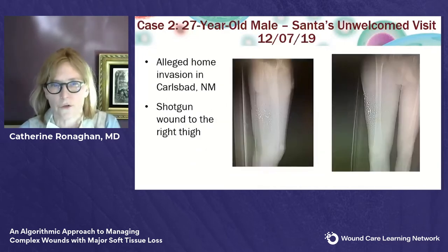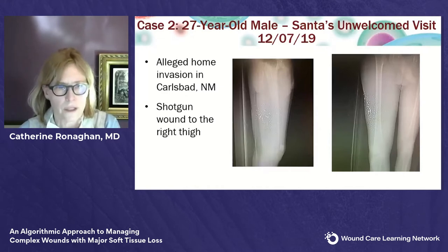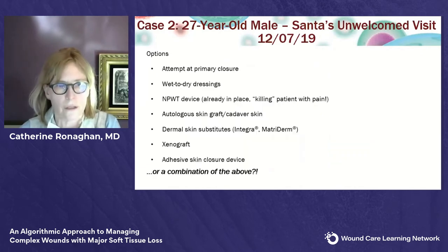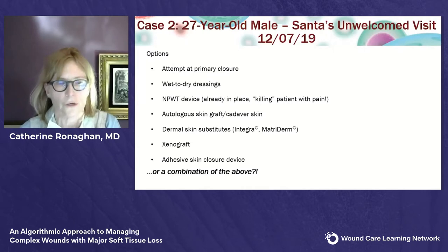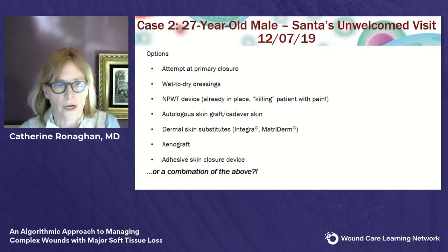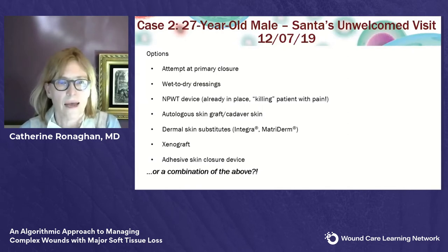The next case is a 27-year-old from Carlsbad who sustained a shotgun wound to the right thigh in an alleged home invasion. You can see the pellet distribution. Options include attempted primary closure, wet-to-dry dressings, or negative pressure wound therapy — which my colleague initially placed. The patient couldn't tolerate the negative pressure device and said it was actually killing him, at one point saying please just cut off my leg instead.